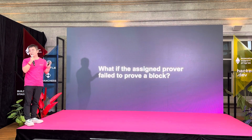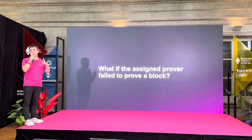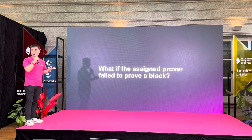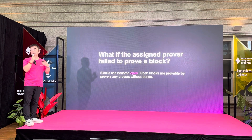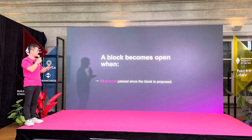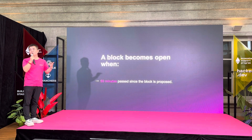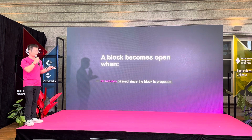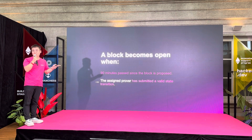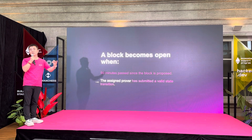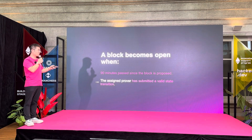So this 90-minute proving window — during it, only the assigned prover can prove the block. What if this prover fails to prove the block? The block can become open, meaning it can be proven by any other provers and those provers don't have to place any bond — it's an open competition. The block becomes open when 90 minutes has passed with no proof submitted from the assigned prover, or if the assigned prover has already submitted a valid proof but someone wants to challenge it with another proof.